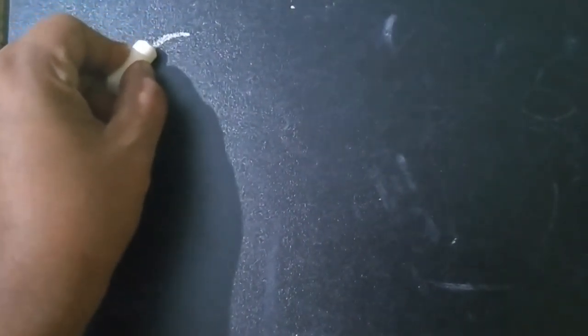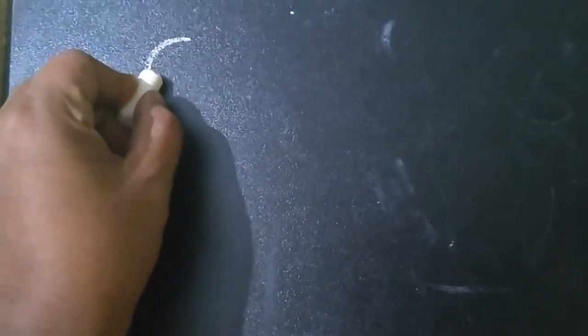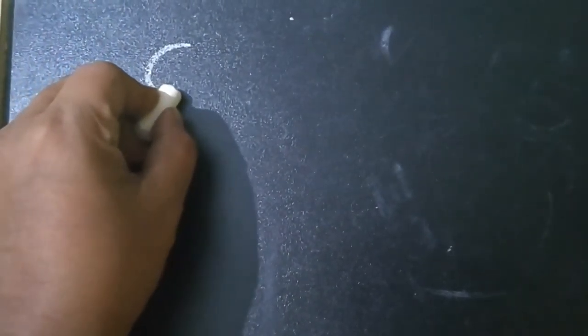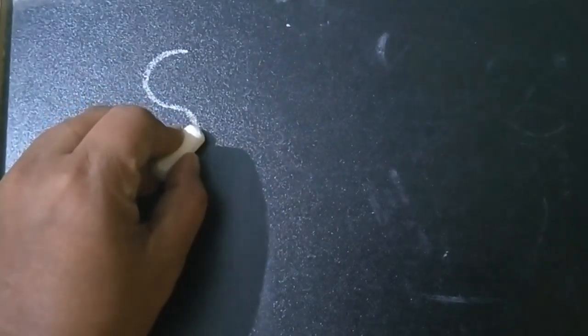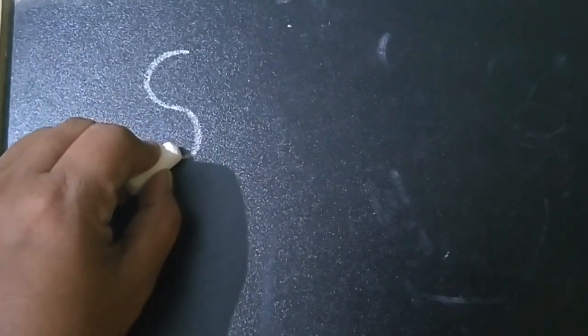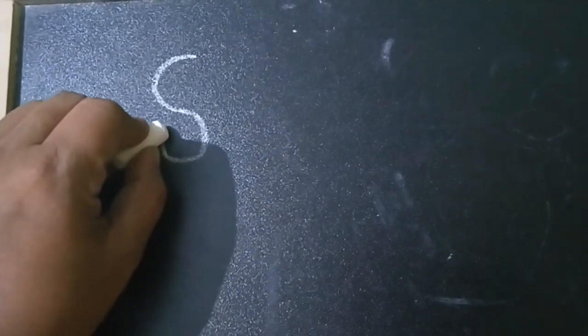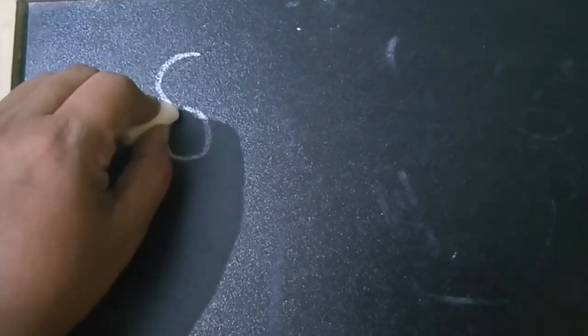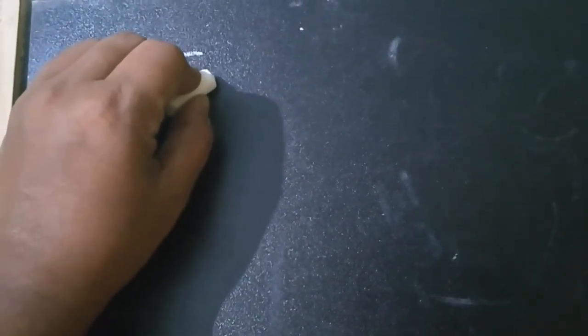So make a small backward curve, come down, make a forward curve, turn and go up making a curve, cross and make a curve and join. Number 8.